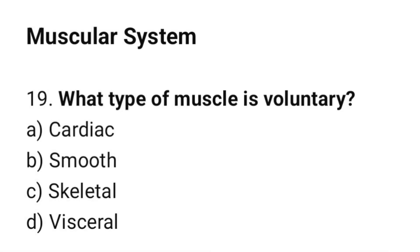Question number 19: What type of muscle is voluntary? The correct answer is C: Skeletal.